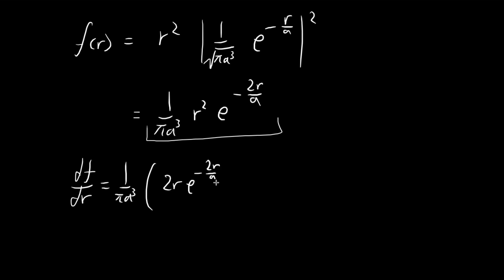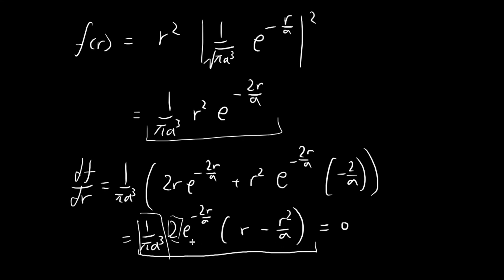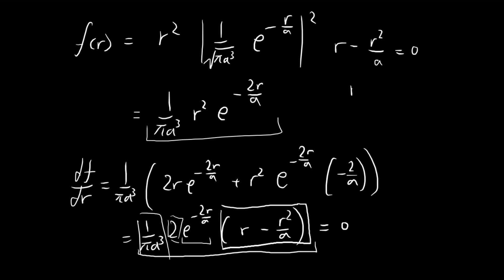Applying the product rule, I can pull out common factors. This simplifies to a factor of 2r minus 2r² over a. We want this to be equal to 0. The exponential and constant prefactors won't equal 0, so in order for the whole term to be equal to 0, it depends on the expression r minus r² over a equals 0. So we consider cases where r minus r² over a is equal to 0. You can see there are two possibilities: r is equal to 0 and r is equal to a.